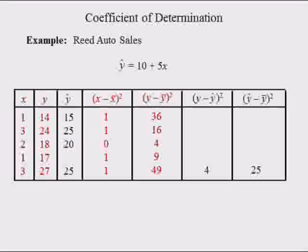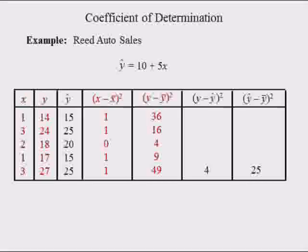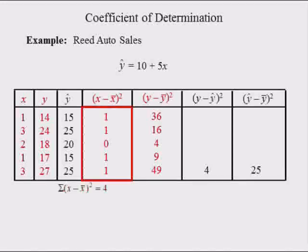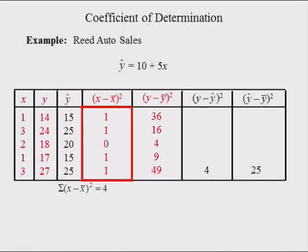Plugging the fourth observed value of x, which equals 2, into the regression equation yields 10 plus 5 times 2, which equals 20. Plugging x equals 1 into the regression equation yields 10 plus 5 times 1, which equals 15. Summing the squared deviations from x's mean yields the total variation in x. Summing the squared deviations from y's mean yields the total sum of squares, also known as the total variation in y, which is equal to 114.